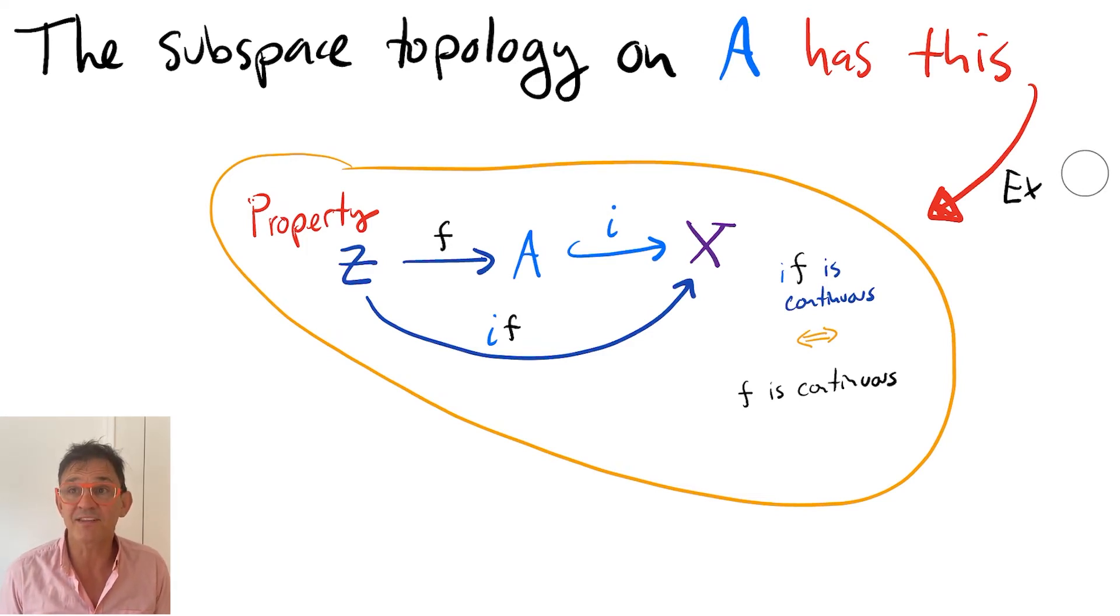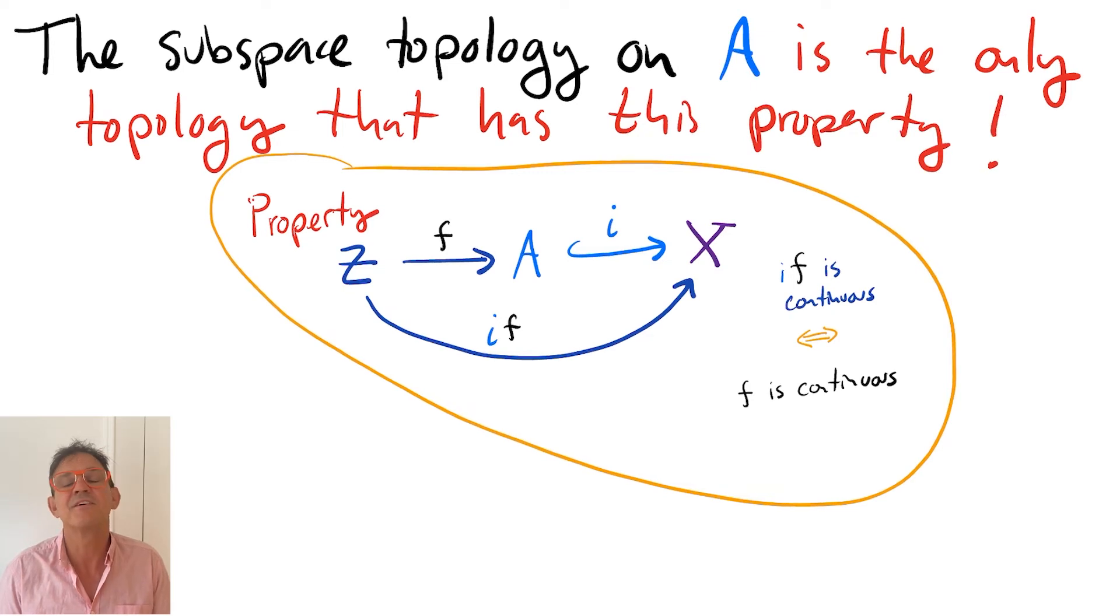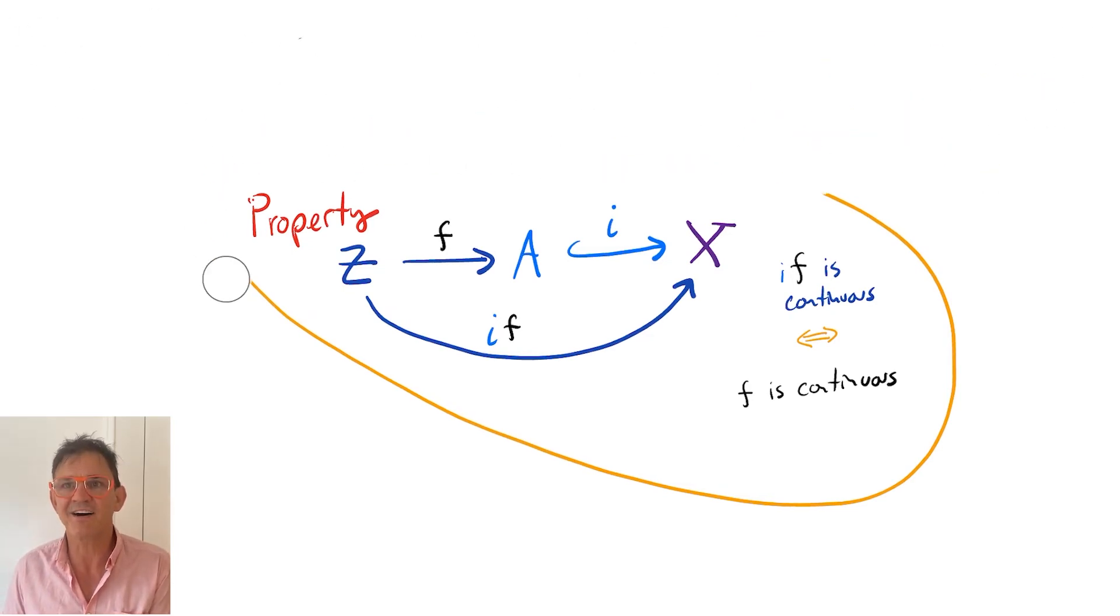The second part of the claim, and the more interesting one, is that the subspace topology is the only topology on the set A that has this property. To prove it, suppose tau is a topology on A that has the property.